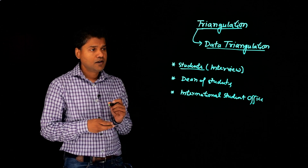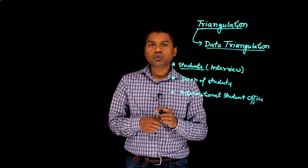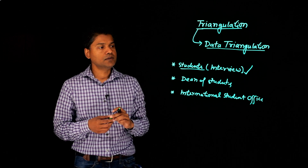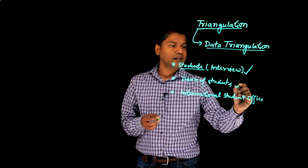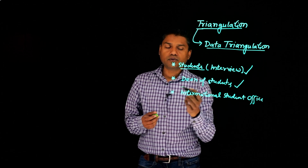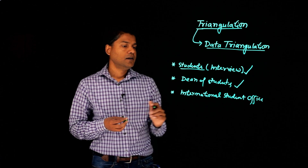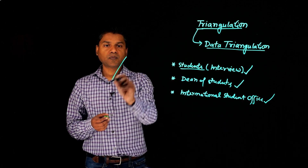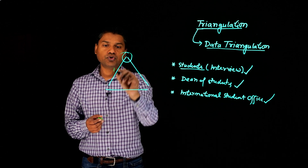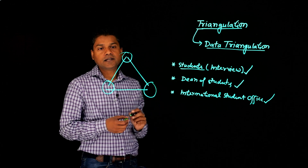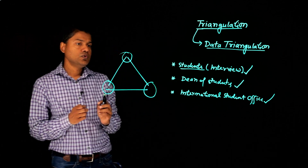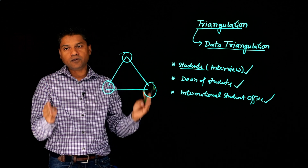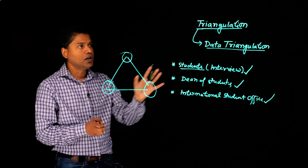So for my research, I'm collecting data from different sources. The primary source is interview data, where I'm interviewing the international students. Secondary, I'm collecting data from the Dean of Students Office. And then I'm also collecting data from the international student office. These three data sources I can analyze and triangulate to really see the authentic experience of international students in a more comprehensive manner. This is what we call data triangulation.